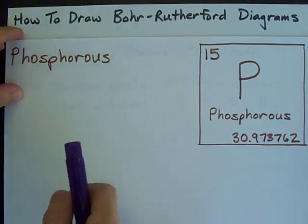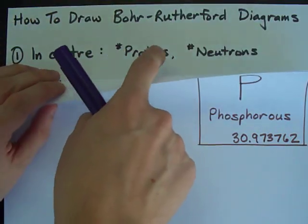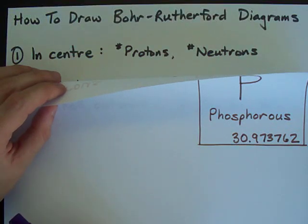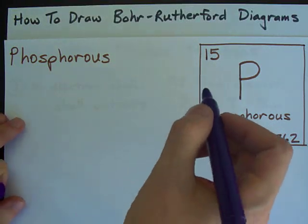The first thing you need to do to draw a Bohr-Rutherford diagram is figure out how many protons and how many neutrons you have in your atom.